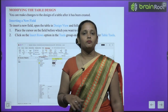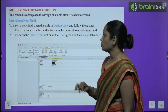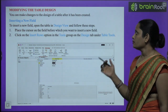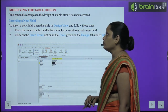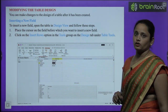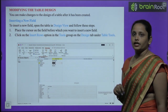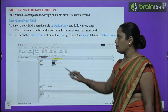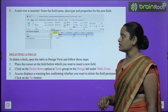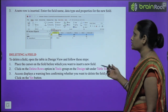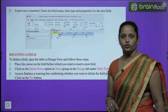Next, modifying the table design. You can make changes in the design of the table after it has been created. To insert a new field, open the table in Design View, place the cursor on the field where you want to insert a new field, and click Insert Row in the Design tab under Table Tools. A new row is inserted — enter the field name, data type, and properties of the new field.